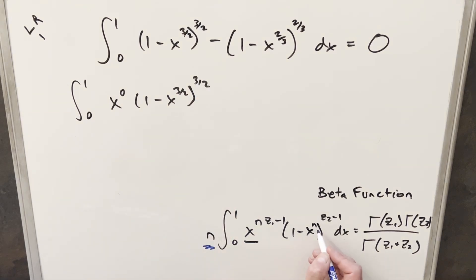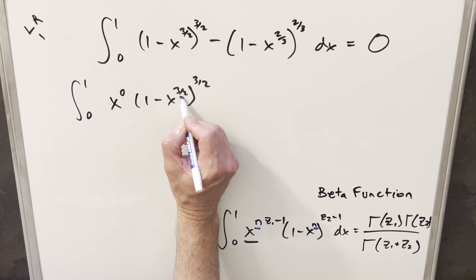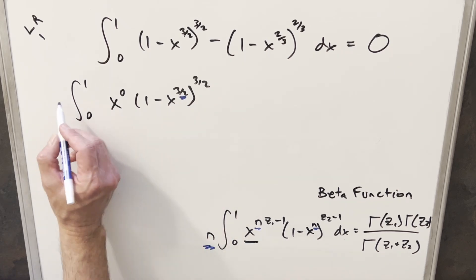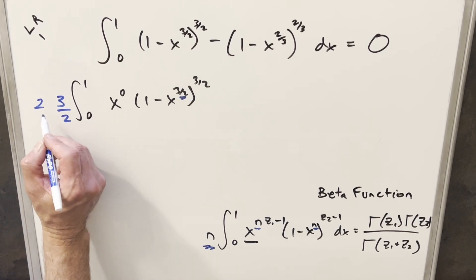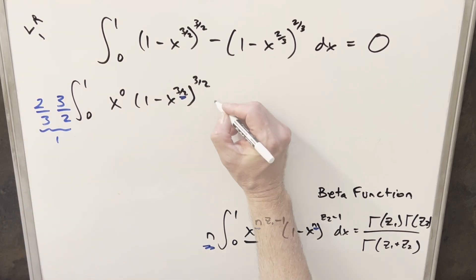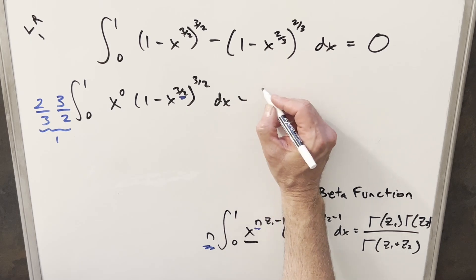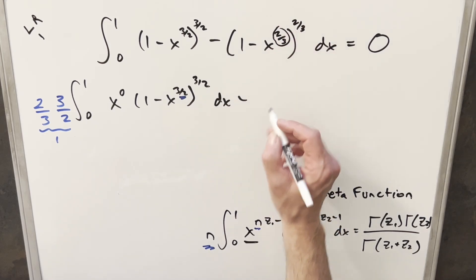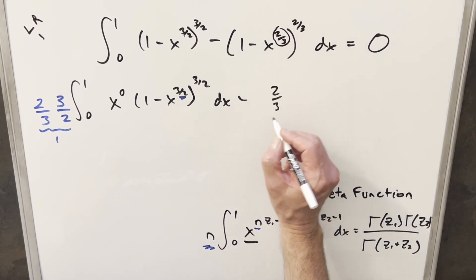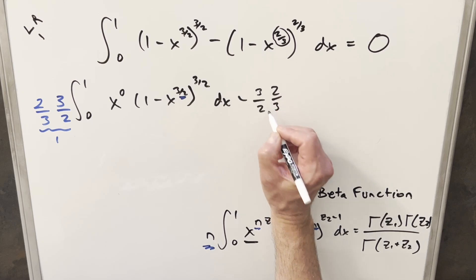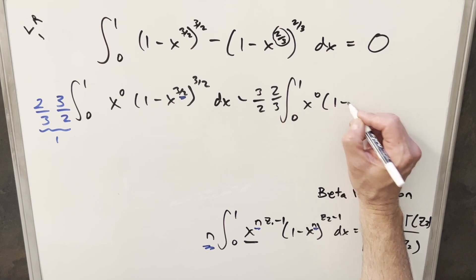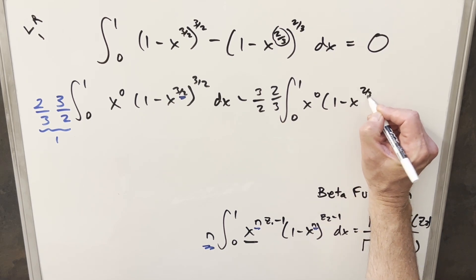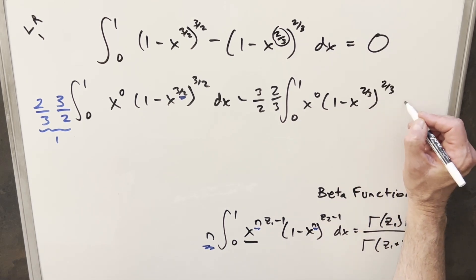The other thing I need is the n value, which comes from the exponent on x. So I'll factor out a three-halves in front — and so I don't change the value, I'll multiply by two-thirds, making it just one in front. Then I do the exact same thing on the second integral: here the n value gives two-thirds out front, and I multiply by three-halves. I'll create the x to the zero again, giving (1 minus x^(2/3))^(2/3) dx.